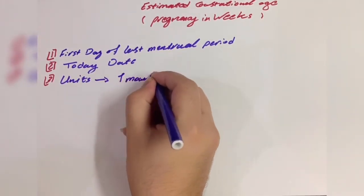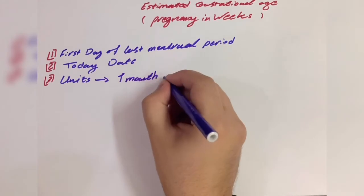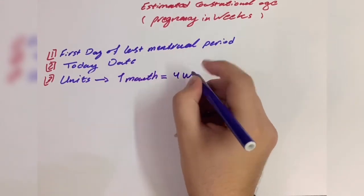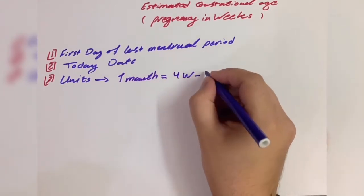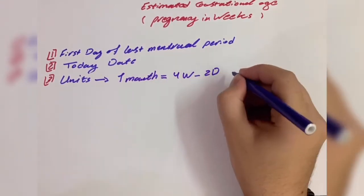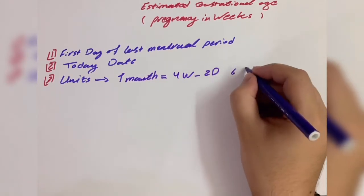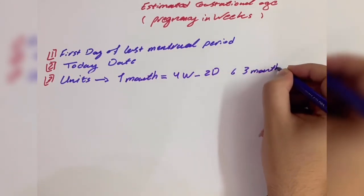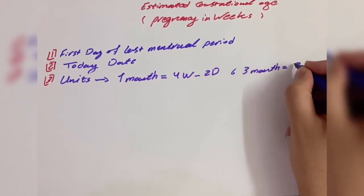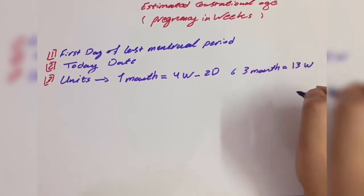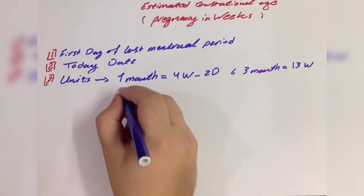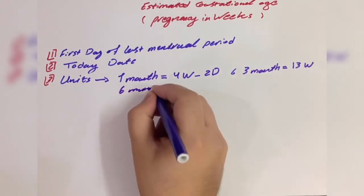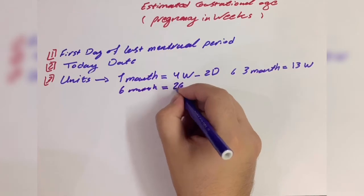One month equals four weeks and two days. Three months equals thirteen weeks. And six months equals twenty-six weeks.